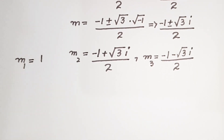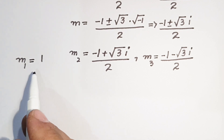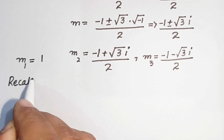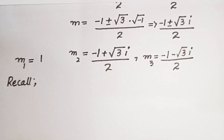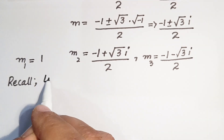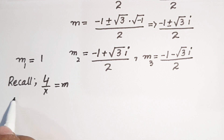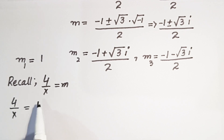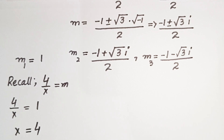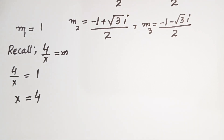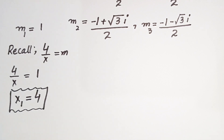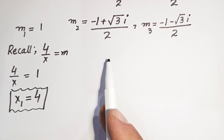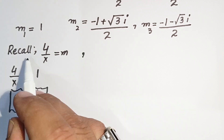Now we recall our substitution that 4 over x equals m. For m1 equals 1, we get 4 over x equals 1, so by cross multiplication x equals 4. This is our first value, x1 equals 4, which is the real solution.